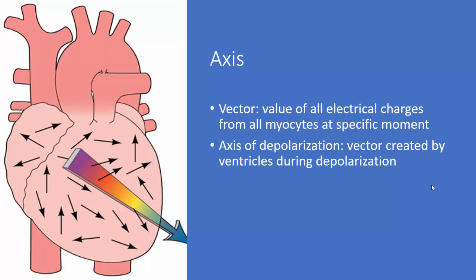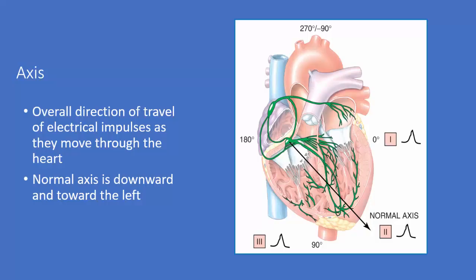That leads us into axis. The axis of depolarization is the vector created by the ventricles during depolarization. This arrow you see here is actually representing the axis at the regular angle, around 59 or 60 degrees. Overall, the direction of travel of electrical impulses as they move through the heart forms the axis. The normal axis is downward and to the left.